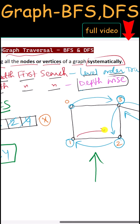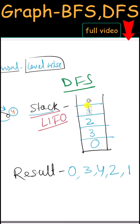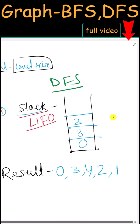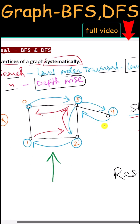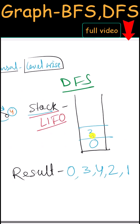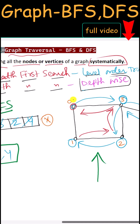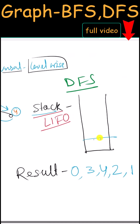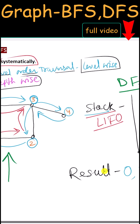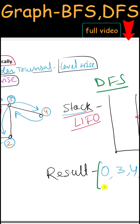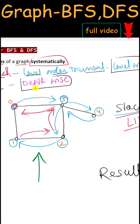Next, unvisited node 1 is pushed onto the stack and included in the result. Now there are no unvisited nodes, so we backtrack: we pop 1 from the stack, then pop 2, then pop 3 — no adjacent unvisited nodes remain — then pop 0 from the top of the stack. Since the stack is now empty, this is our final DFS output.